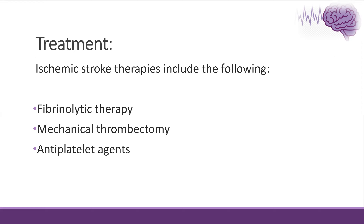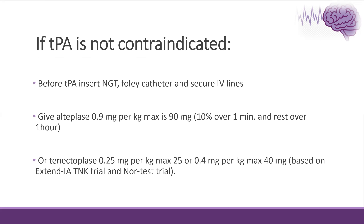Treatment options include fibrinolytic therapy — tissue plasminogen activator, TPA — mechanical thrombectomy, or antiplatelet if the patient is not within the window for TPA or not a candidate. If the patient presents with acute focal neurological deficit within 4.5 hours and there is no contraindication, we give TPA. We insert an NG tube and Foley catheter, secure IV line, and give alteplase 0.9 mg/kg with a maximum dose of 90 mg. Ten percent is infused over one minute and the rest over one hour. Tenecteplase is another option with per-kg dosing.